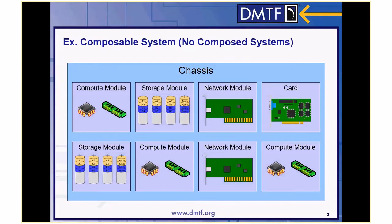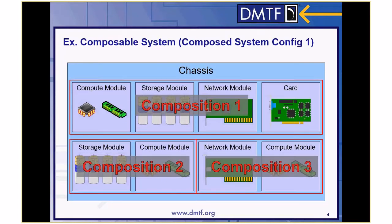As an example, let's say we have a composable system with a mixture of compute, storage, and network modules. In the initial state, each module is free and not bound with one another. At some point in time, a client comes in and creates a set of composed systems. In this case, the top row of modules form the first composition, the modules in the lower left form a second composition, and the two modules in the lower right form a third composition. Each of these compositions represent a logical computer system.